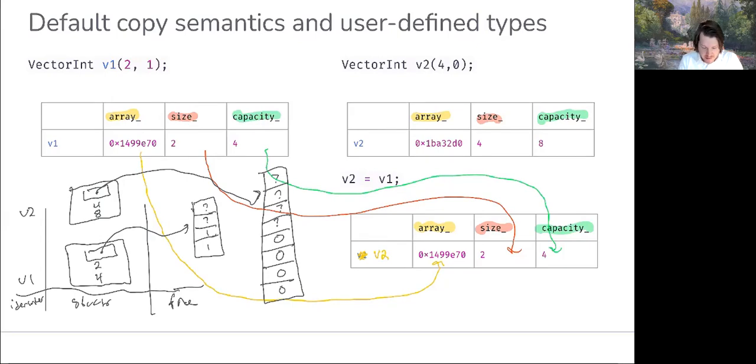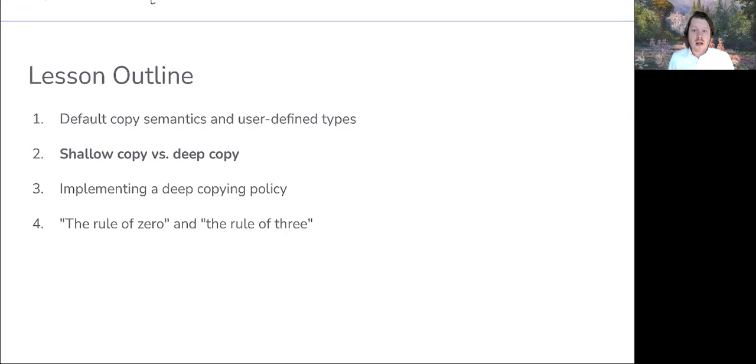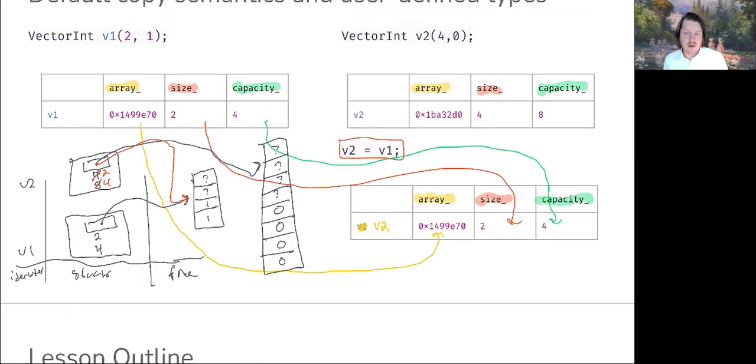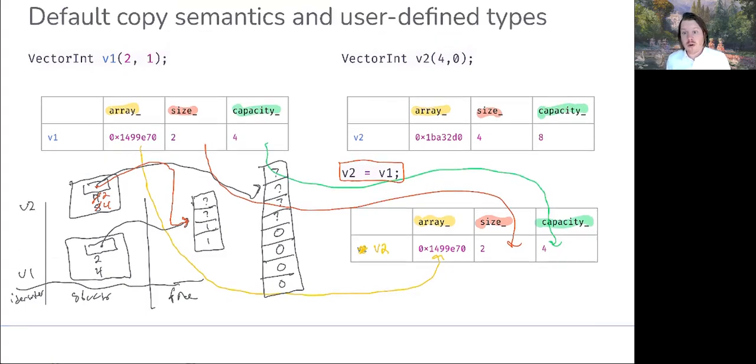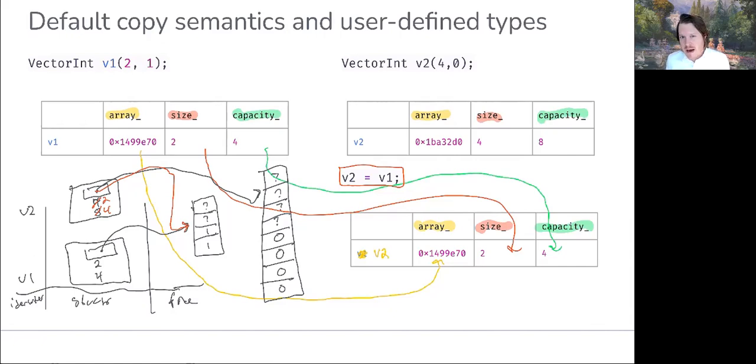When we hit the assignment statement, the default behavior is a member-wise copy. In this case, the size will become 2, capacity 4, and that pointer will point to the same array that v1 does. With all this in mind, let's get into the definition of what's occurring here, which is a shallow copy. In this case, v1 and v2 at the end of either initialization or assignment are both sharing this dynamically allocated object. When you think about this, in a lot of instances, that's probably not what we'd like to happen. We'll see that a deep copy is likely going to be the desired effect.